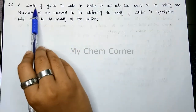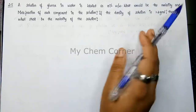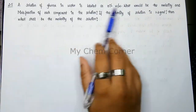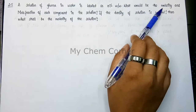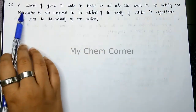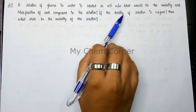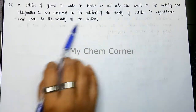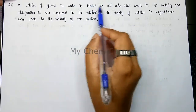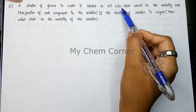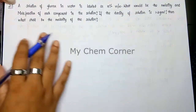As long as you can understand the first sentence, the remaining is just by formula. You are given W by W and asked to calculate molality and mole fraction. After that, density is given, and using density you can calculate molarity. It's a very simple problem as long as you understand the first sentence that says 10% W by W.